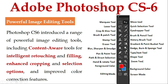Here we can see the CS6 toolbar, which consists of the Marquee tool, Lasso tool, Crop and Slice tool, Brush and Patch tool, Stamp tool, Erase tool, Blur, Sharpen and Smudge, Pen and Point tool, Path and Direct Selection, Rotate tool, Foreground color, Editing mode, Move tool, Quick Selection tool, Eye Dropper tool, Brush and Pencil tool, History Brush tool, Gradient and Paint Bucket tool, Dodge, Burn and Sponge tool, Type and Text tool, Shape tool, Zoom tool, Background color, and Screen mode.